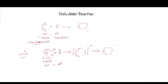Pericyclic reactions, or reactions that go through a cyclic transition state, may be carried out under thermal or photochemical conditions. The Woodward-Hoffmann rules tell us whether the reaction is thermally or photochemically allowed, and this can be explained by considering the frontier molecular orbitals of the reacting species. The Diels-Alder 4+2 cycloaddition is thermally allowed, as we'll see when we consider the frontier molecular orbitals.